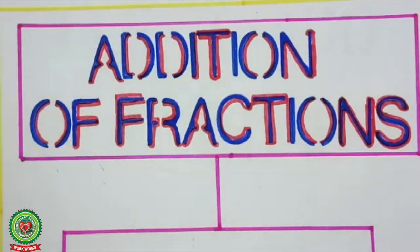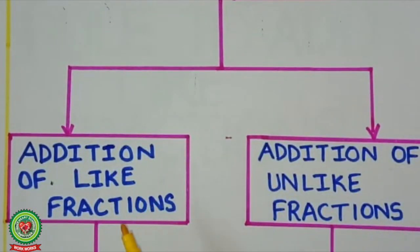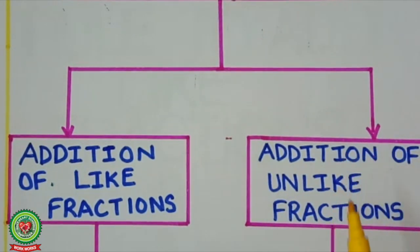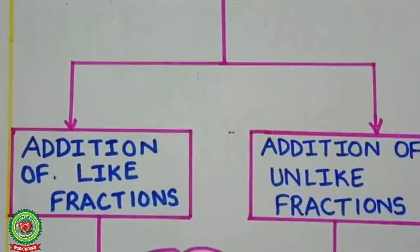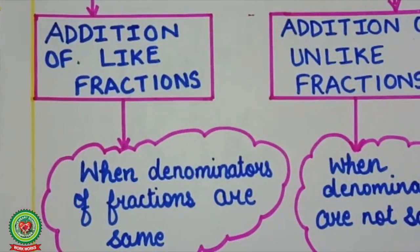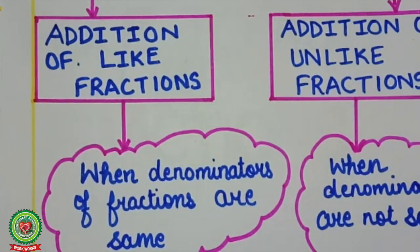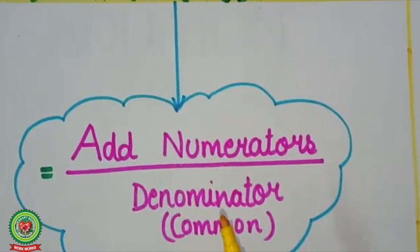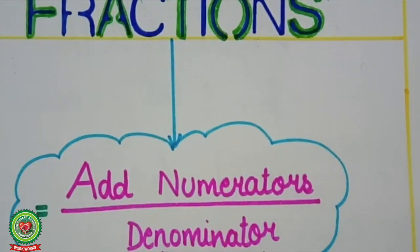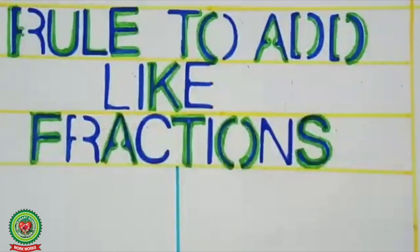Addition of fractions are of two types. Number one is addition of like fractions, and number two is addition of unlike fractions. First of all, we will discuss addition of like fractions. As you know, like fractions are the fractions where denominators are the same. So today we will learn how to add fractions where denominators are the same. There is one rule which we have to follow while adding like fractions: we will write the denominator one time only, commonly, because the denominator is the same, and add the given numerators. This is the rule we follow when adding like fractions.